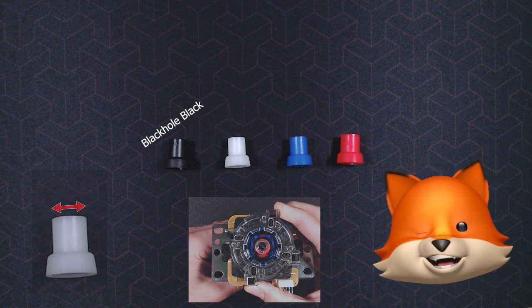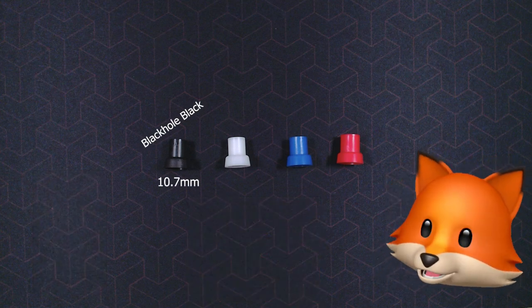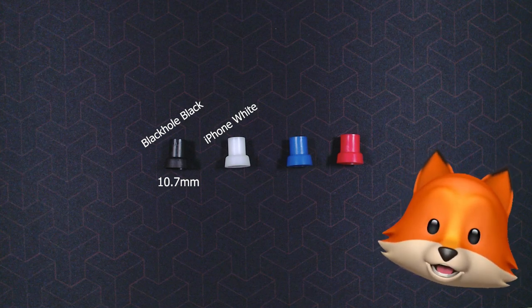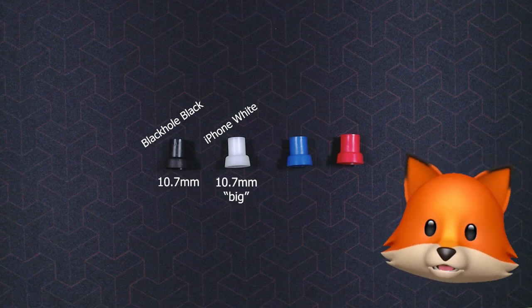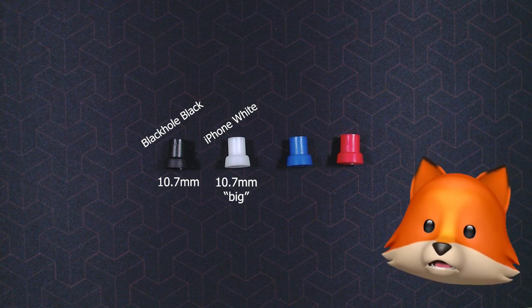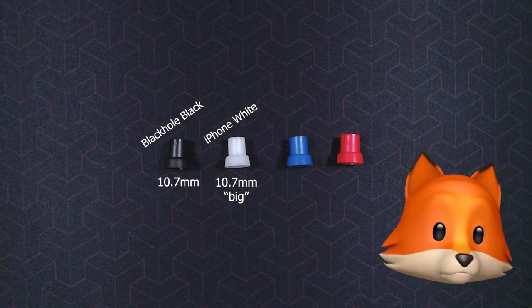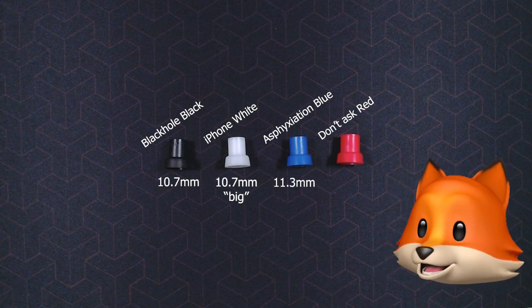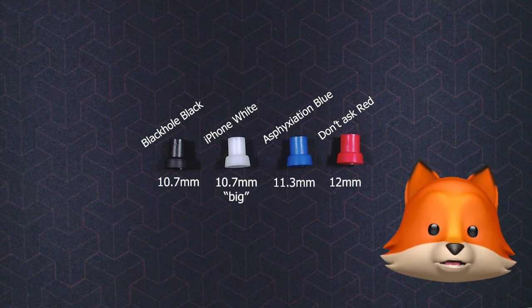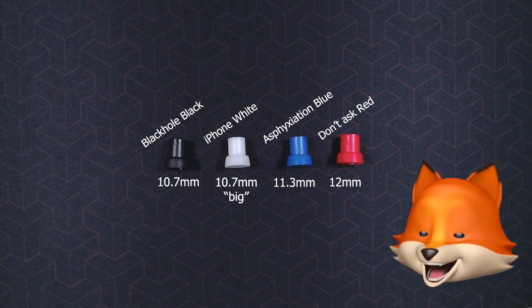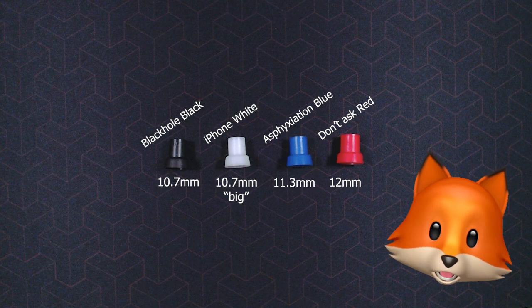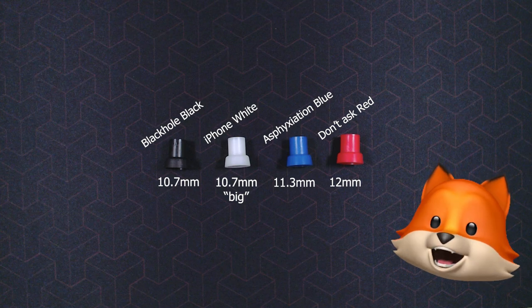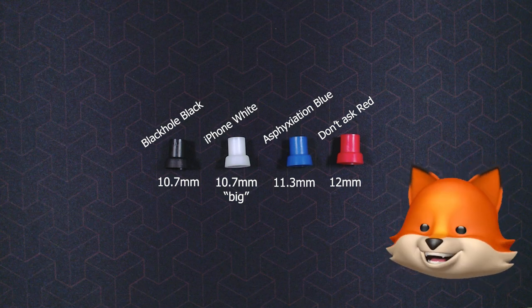So with the black one is approximately 10.7 millimeters. The white one is ever so slightly bigger but I still caught it at about 10.7 so we'll call it a big 10.7. It's like 10.7 and some change. Now when we get to the blue one it's quite a bit different. We are looking at about 11.3 millimeters and the red ends up being a 12 millimeter even. So what does it all mean? It just means that the bigger the actuator also means that it's going to get to the restrictor gate faster. So that just means a shorter throw for your joystick.